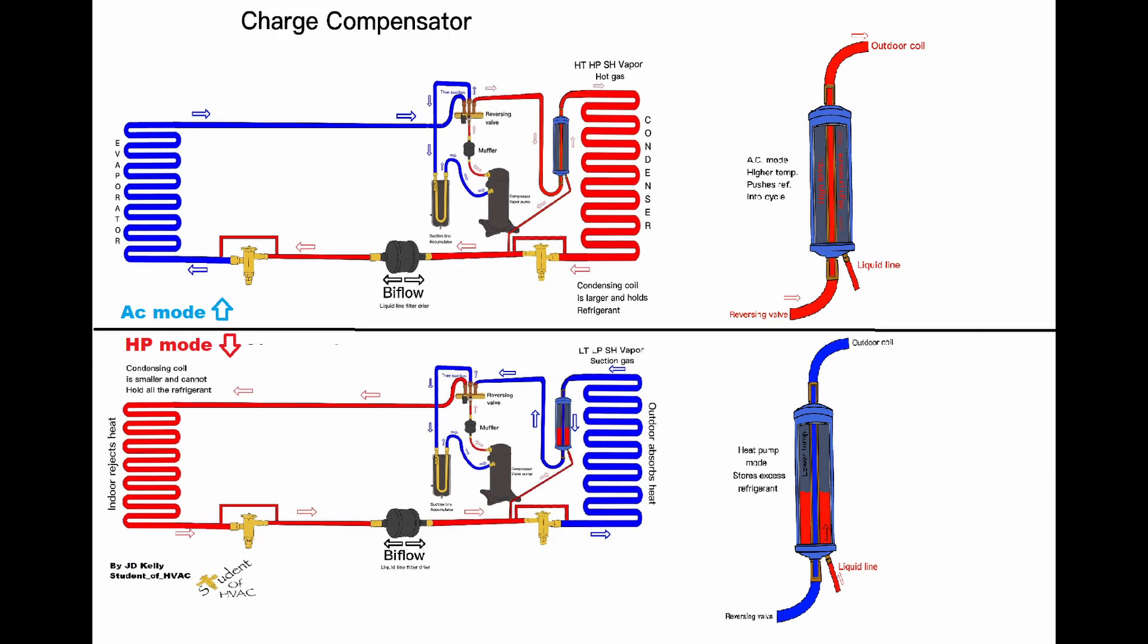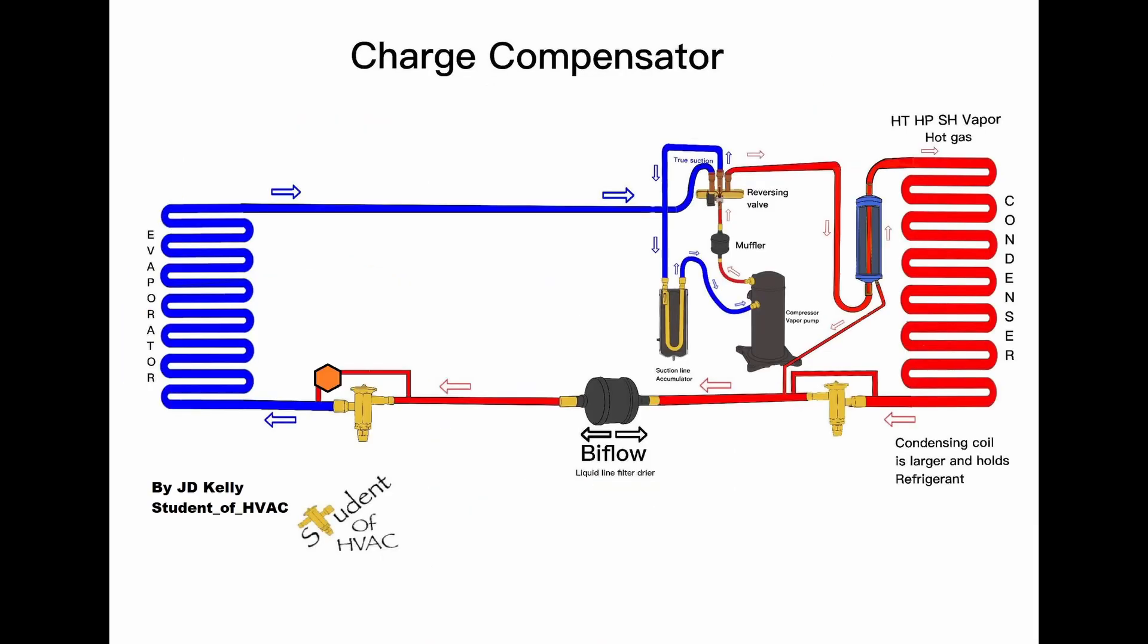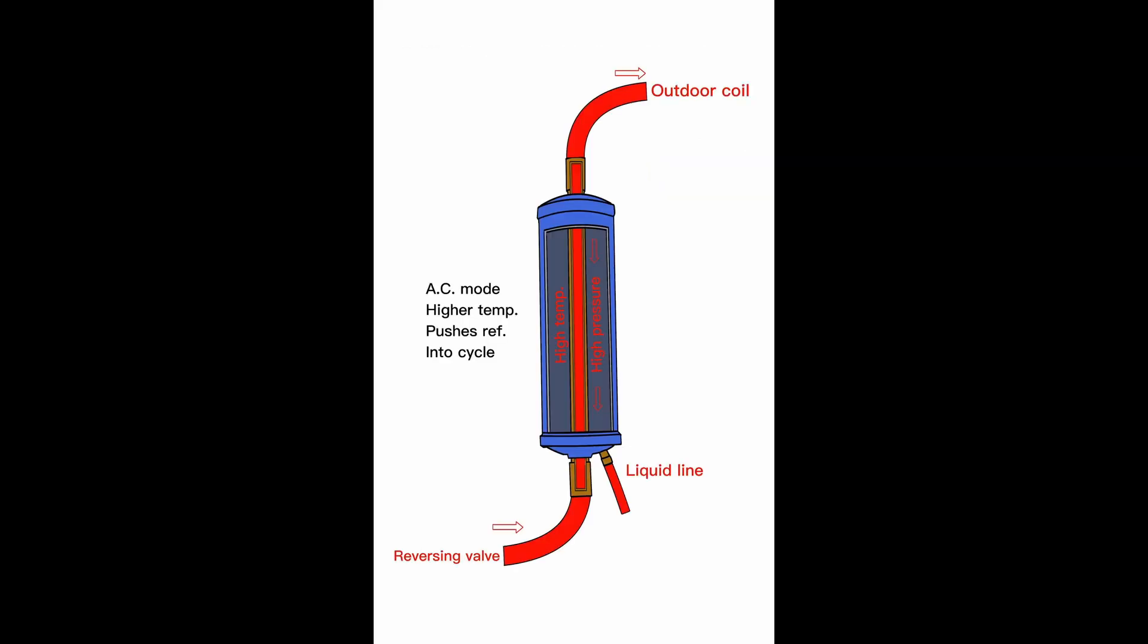In the last video, we talked about the charge compensator being located between the reversing valve and the outdoor coil on the vapor line or the gas line. In the AC mode, the temperature of that line was hotter and it migrated the refrigerant into the primary liquid line and it remained empty.